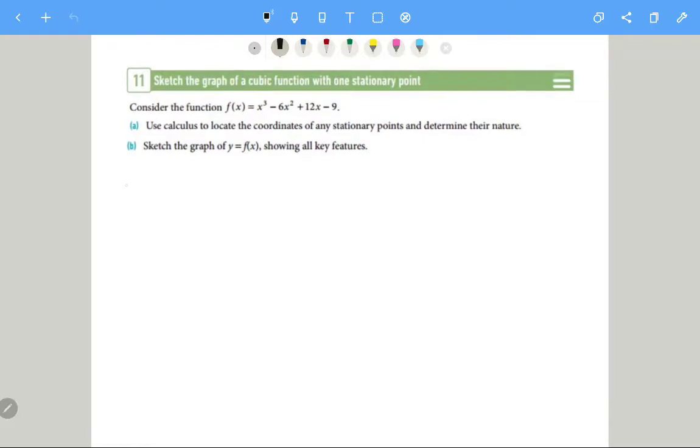So let's first of all work out, a stationary point is any point where f'(x) is equal to 0. So let's work out f'(x): 3x² minus 2 times 6x to the 1 plus 12, and minus 9 derives to nothing.